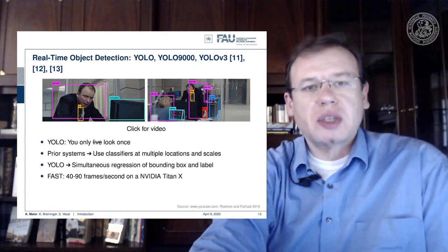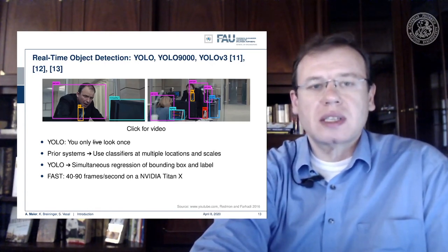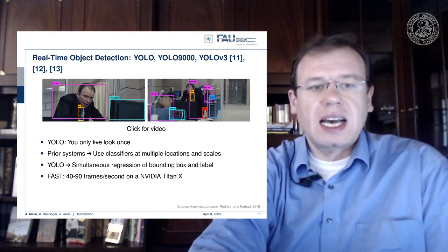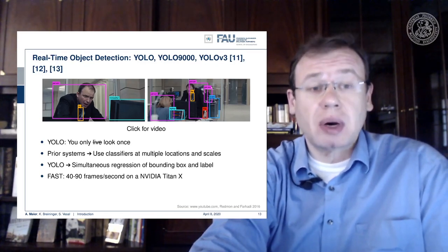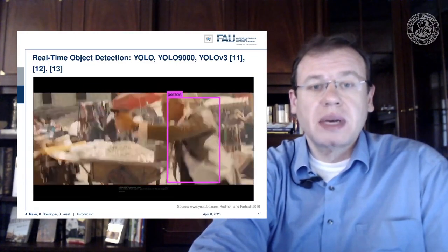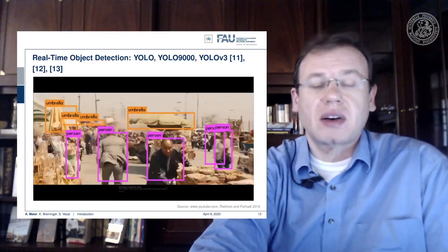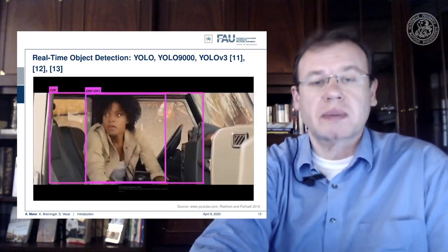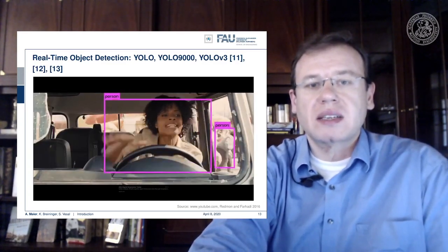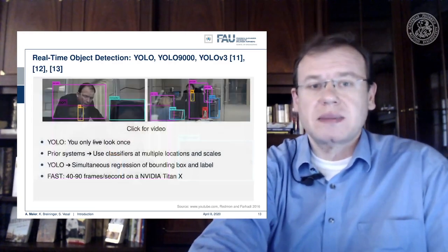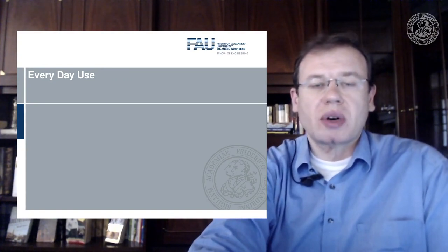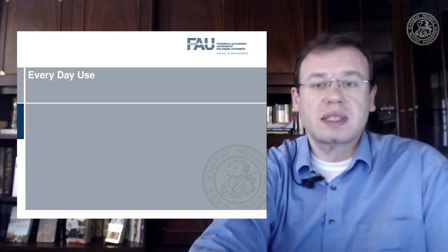There's also real-time object detection that became possible with approaches like YOLO — You Only Look Once — or YOLO 9000, or YOLO version 3. They simultaneously detect bounding boxes and classify them very quickly, running in real time. It's not just working on individual scenes like ImageNet with essentially one object per image — it runs on completely cluttered scenes, and these detectors work on unseen input like movie scenes.